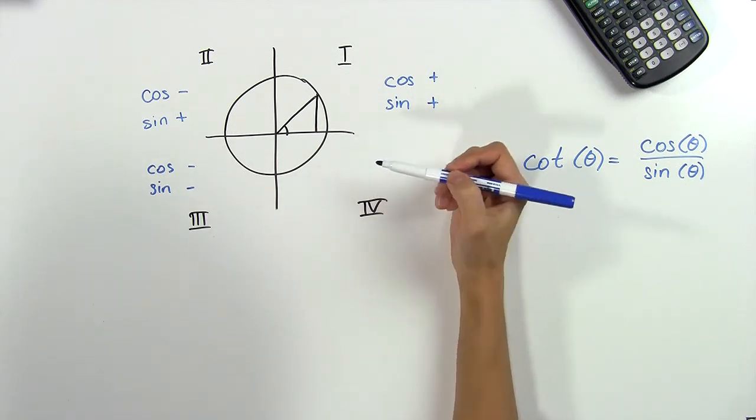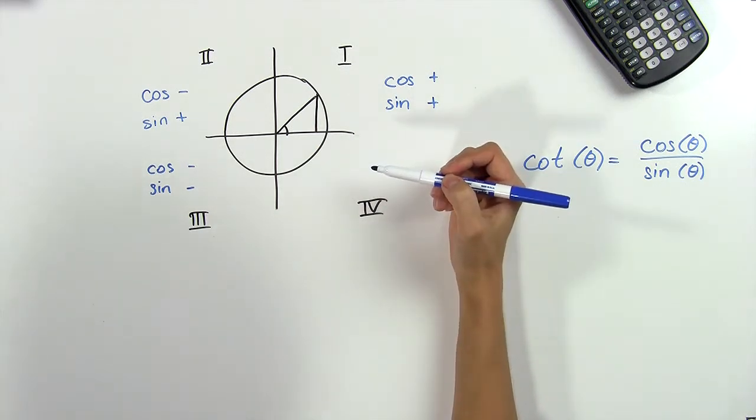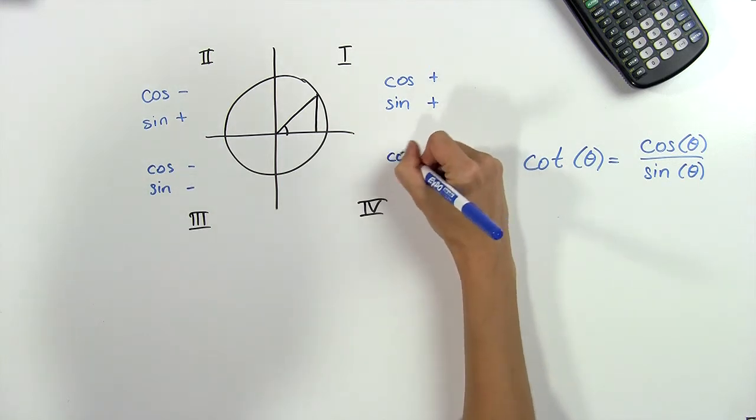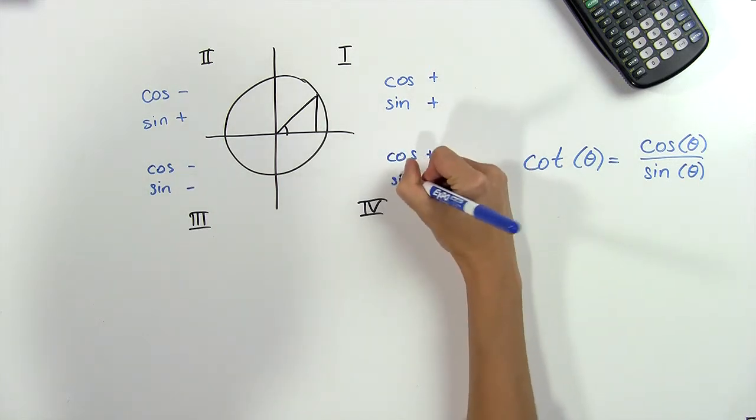Lastly, we have the fourth quadrant, where the x-coordinate is positive, but the y-coordinate is negative. So here, cosine is positive, and sine is negative.